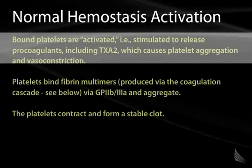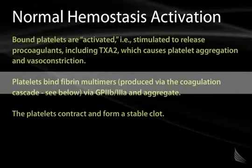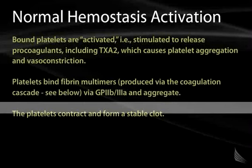These bound platelets are activated and stimulated to release procoagulants, including thromboxane A2, which causes further platelet aggregation as well as vasoconstriction. These platelets serve as a glycoprotein membrane to generate and activate the rest of the protein cascade, and also serve as a binding site for fibrin multimers via the GP2B3A system, allowing them to aggregate, contract, and form a stable clot, thus ensuring hemostasis.